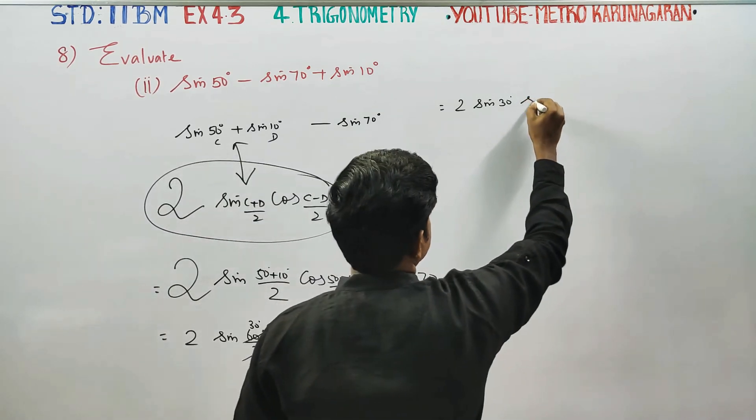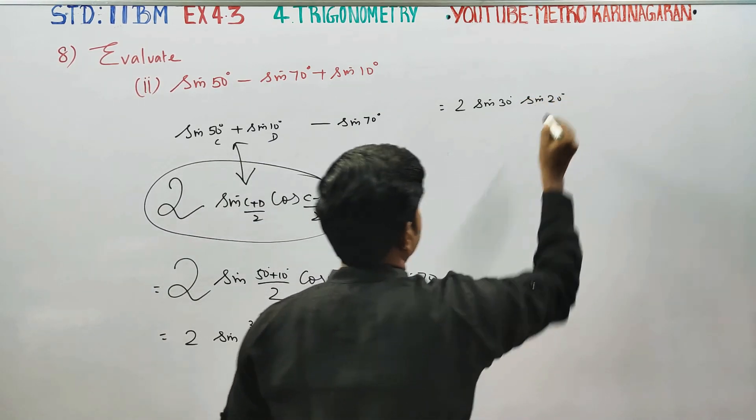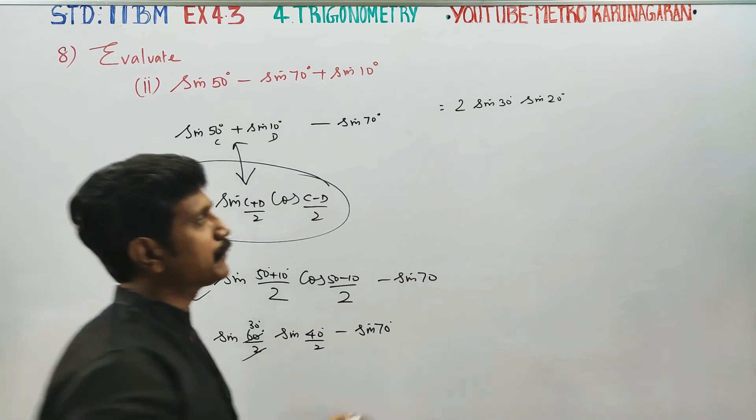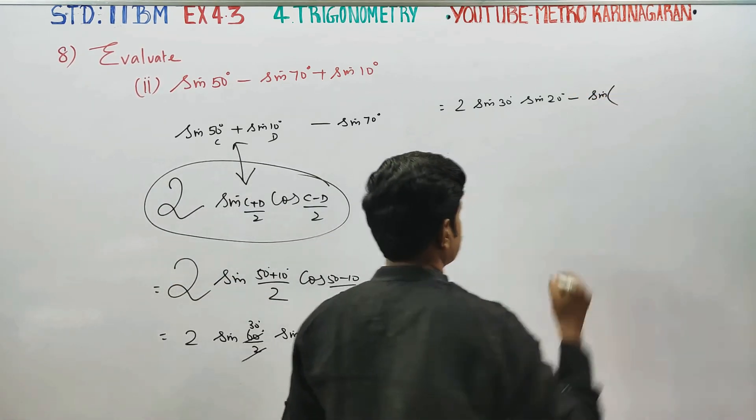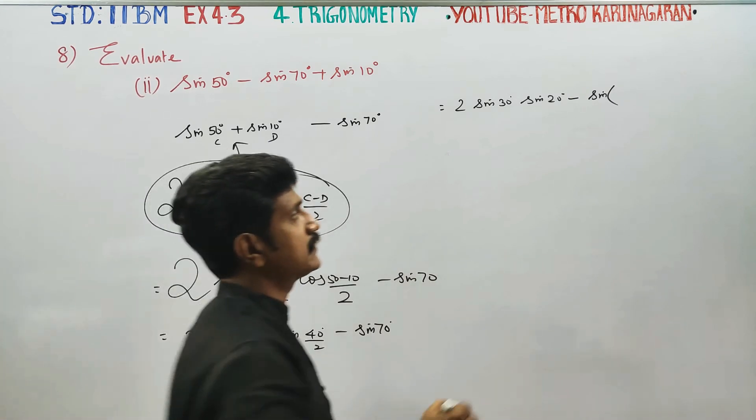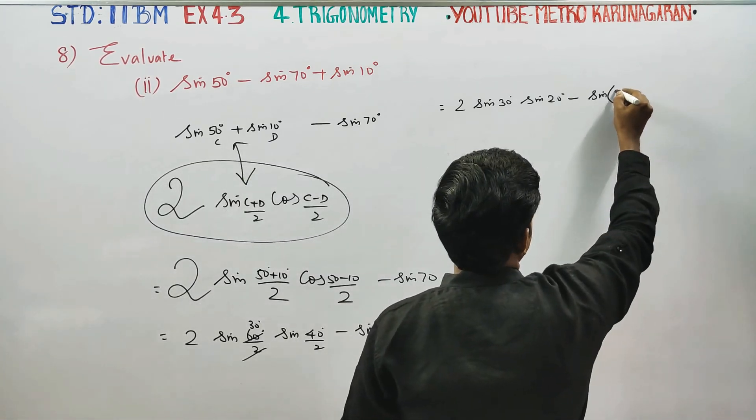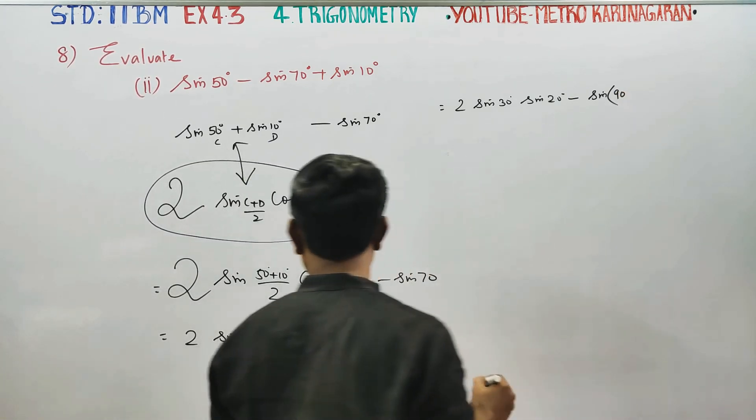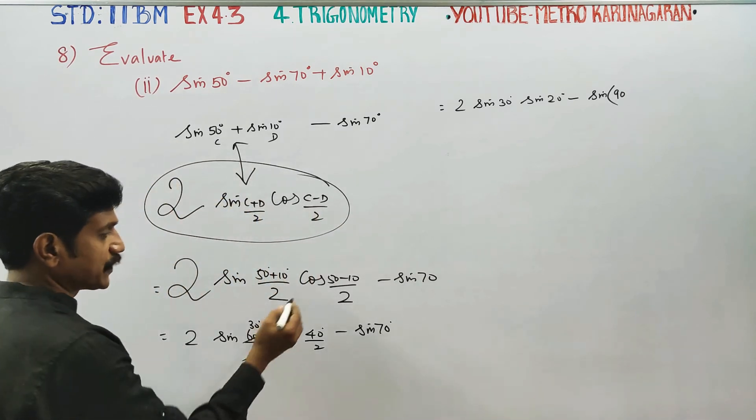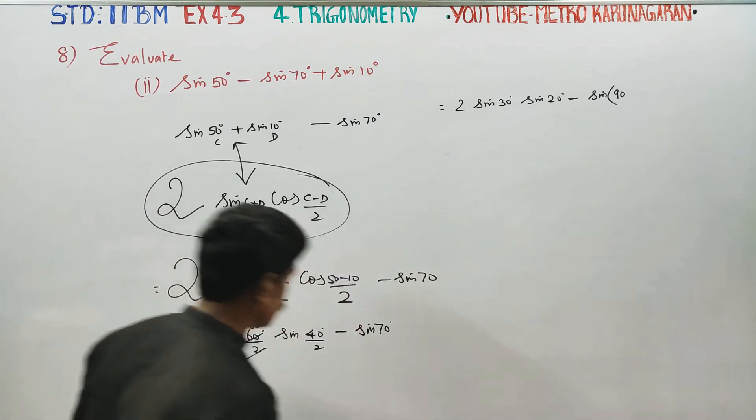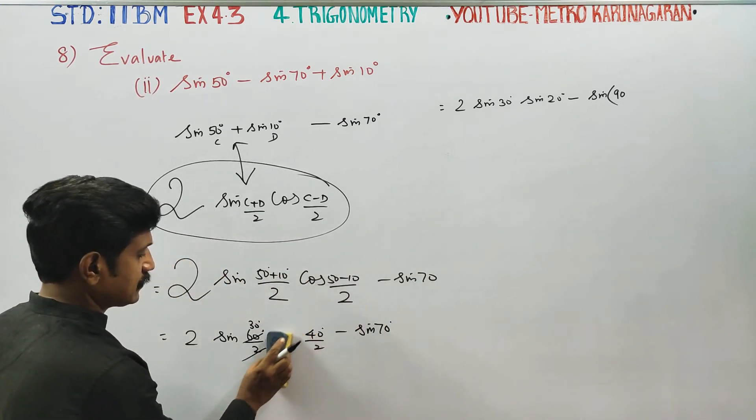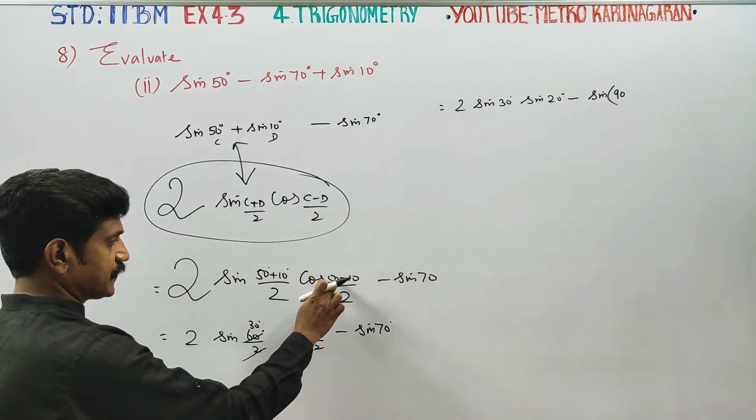Sin 40 by 2, that is sin 20 degrees, minus sin 70. Minus sin 80 by 2, minus sin 40 by 2.